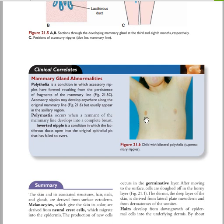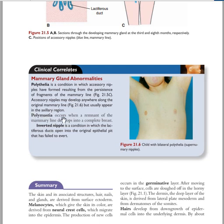These mammary nipples are seen bilaterally. Supernumerary mammary nipples means those extra ones are affected while the normal two remain. In polymastia, those supernumerary mammary nipples become glandular — they grow and produce a complete breast. In inverted nipples, there is protrusion of the nipples inward.